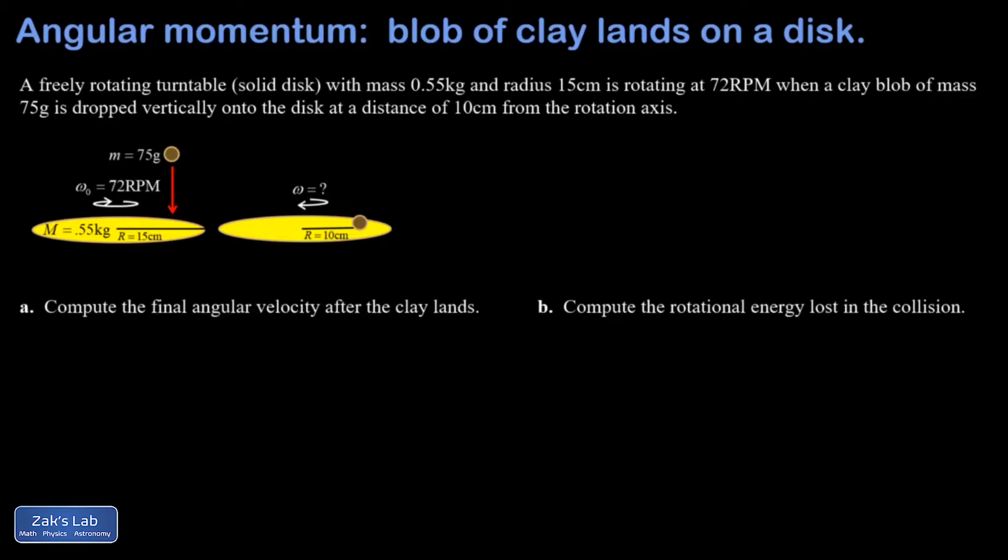It's a perfectly inelastic collision where the two objects join up and rotate with a common angular velocity at the end of the problem. And what's going to happen here is angular momentum is conserved. So I'm going to write down a couple things to aid me in my calculations.